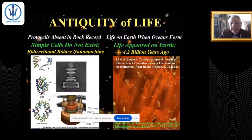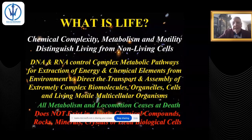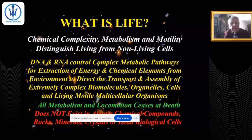The evidence from carbon isotopes and fossils of filaments in hydrothermal vent rocks shows life appeared on Earth about 4.2 billion years ago. What is life? In living organisms, you have chemical complexity, metabolism, and in many cases motility that distinguish living from non-living. Complex metabolic pathways are controlled by DNA and RNA, used for extraction of energy and chemical elements from the environment, and assembling them into complex biomolecules, organelles, cells, and living organisms.